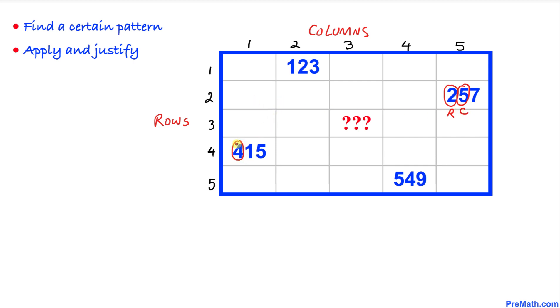Here we have a fifth row and fourth column. Now let's focus on the last digit. This is just the sum of these first two digits. Just add them: 1 plus 2, you're going to get 3. Here, 2 plus 5 is going to give us 7. 4 plus 1 is 5. 5 plus 4 is 9.